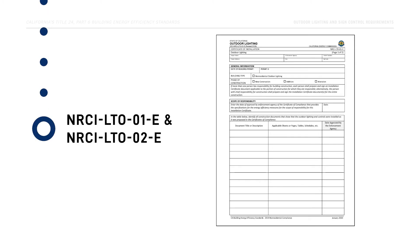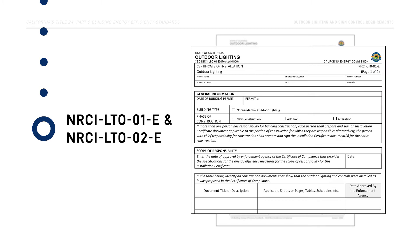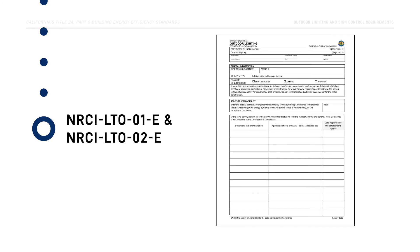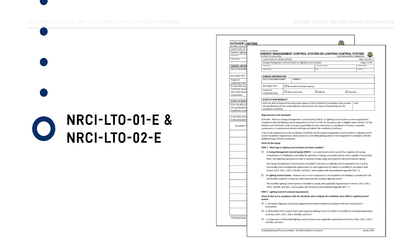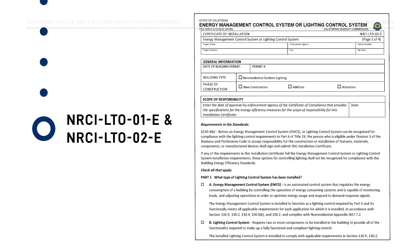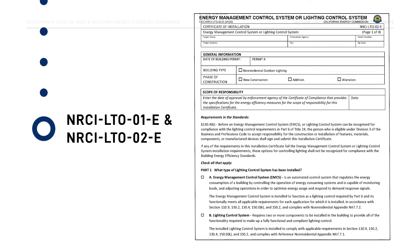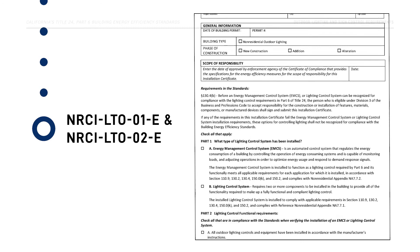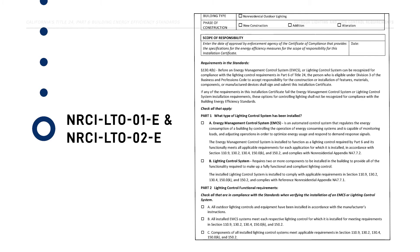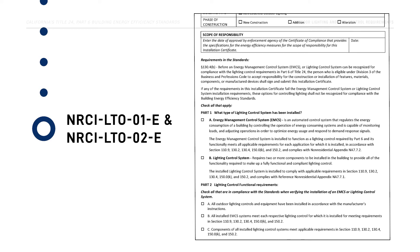The installation team must document each required installed control device on the Certificate of Installation NRCI-LTO-01-E. If an Energy Management Control System, also called an EMCS, or Advanced Lighting Control System is used to meet the requirements, system information is documented on form NRCI-LTO-02-E.